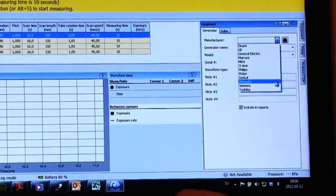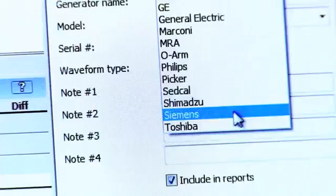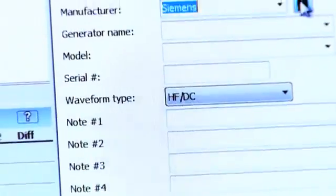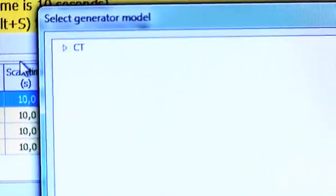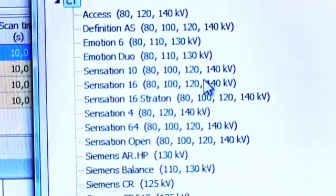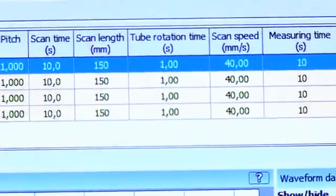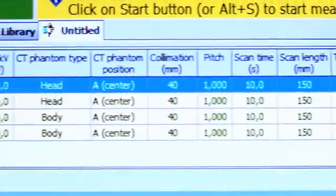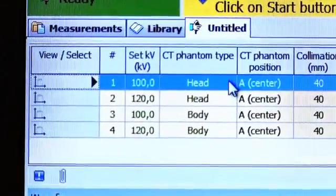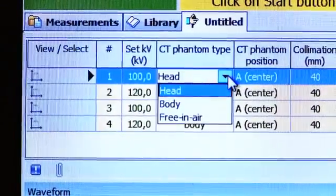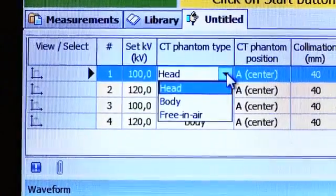To begin, ensure the CT manufacturer and CT type are selected. This is to get the right K factor. The K factor is what allows the CT dose profiler to extract all the parameters in one exposure. You must also select the correct measuring mode. In this case, a measurement in a head phantom.